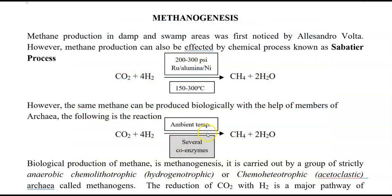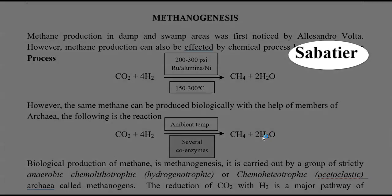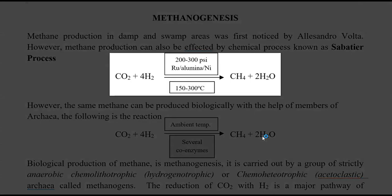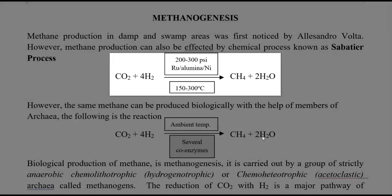Apart from biological production, methane can also be produced using a chemical process referred to as the Sabatier process. In this process, carbon dioxide in the presence of reducing molecules such as hydrogen, at very high temperature and pressure with the help of catalysts like ruthenium, alumina, and nickel, is converted into methane and water.